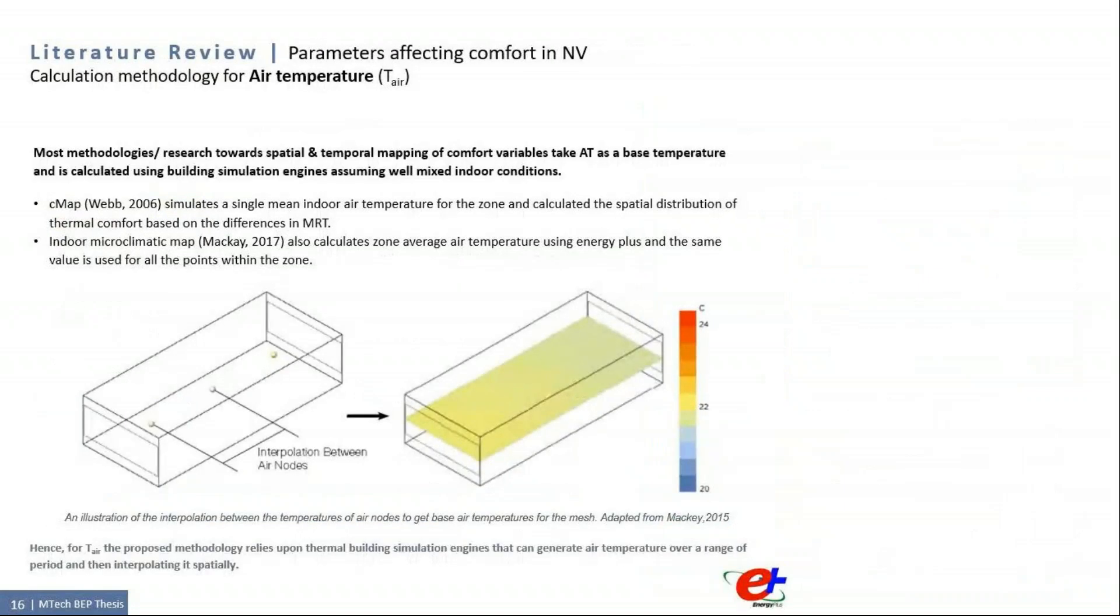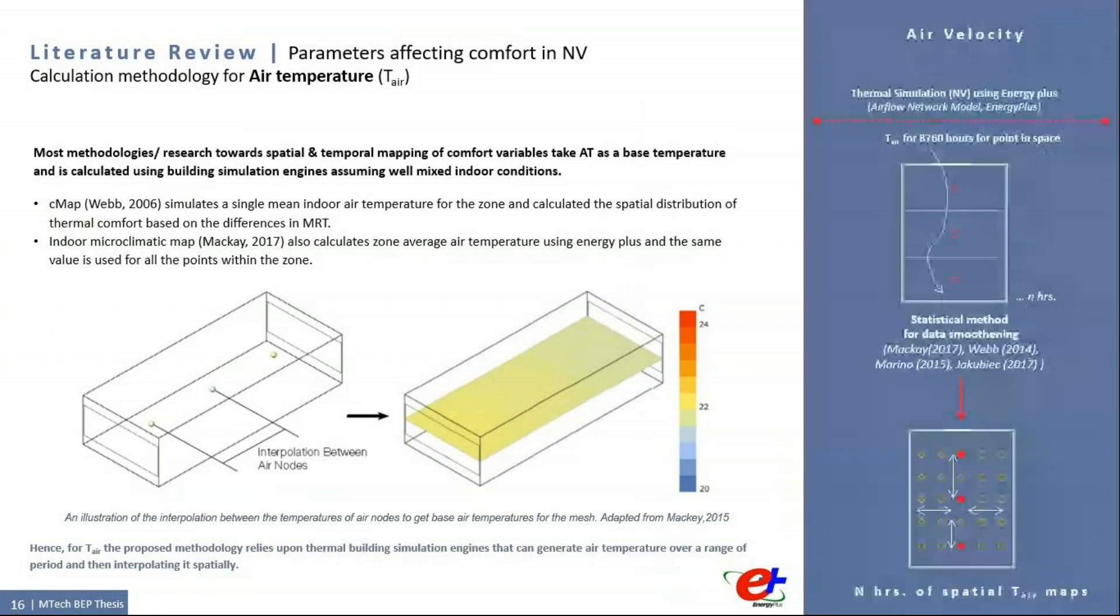This slide explains the methodology for calculating air temperature. Most of the methodology and research towards spatial and temporal mapping of comfort variables take average air temperature as a base temperature and is calculated using building simulation engines assuming well mixed indoor conditions and captures the diversity in the space because of other parameters. The CMAP symbolizes the spatial distribution of thermal comfort based on the mean radiant temperature. The same with the indoor microclimatic map which calculates the average zone air temperature using EnergyPlus and the same value is used for all the points. Thus, this methodology has been adopted to calculate air temperature and the same zone-based temperature will be used in the entire space.